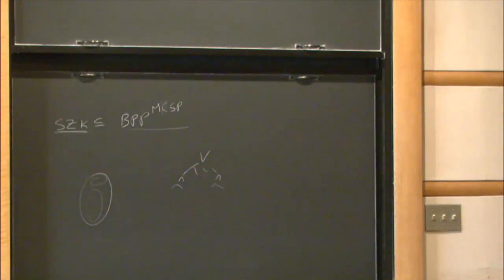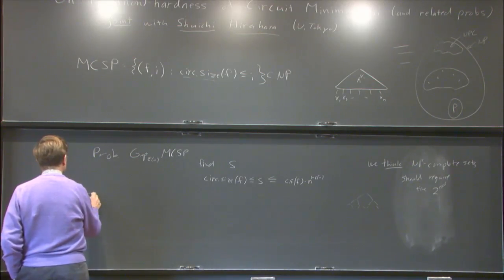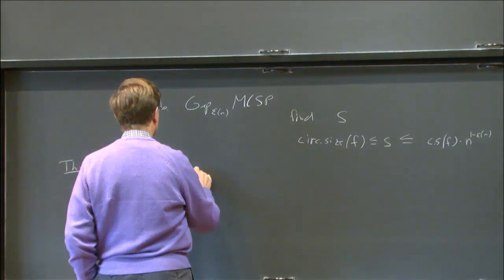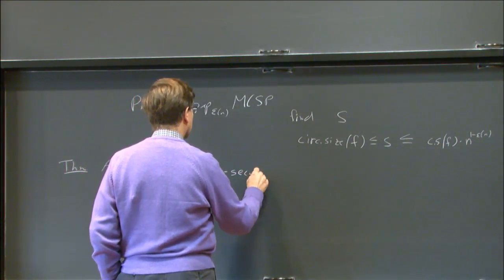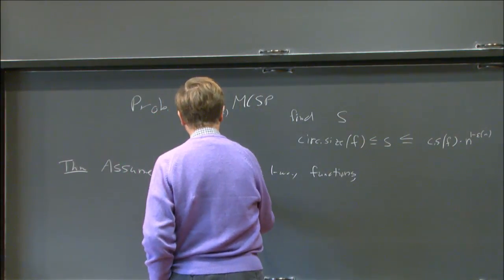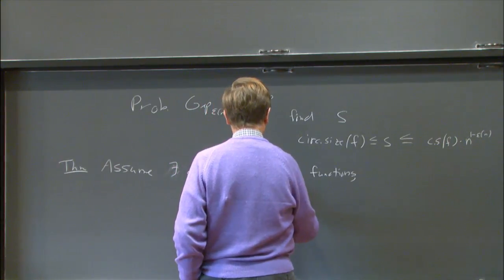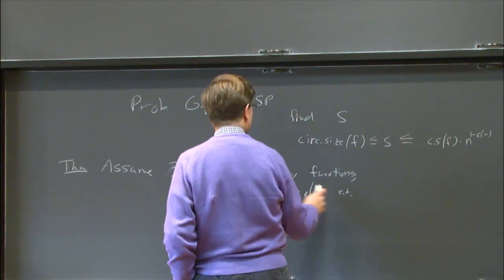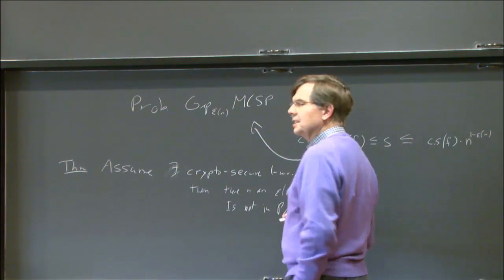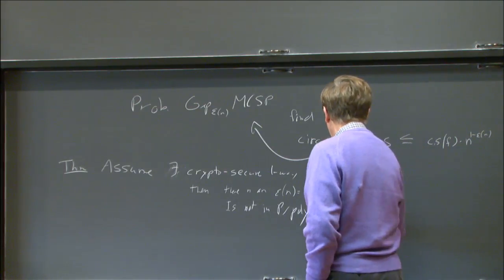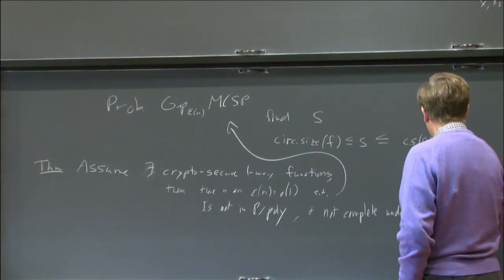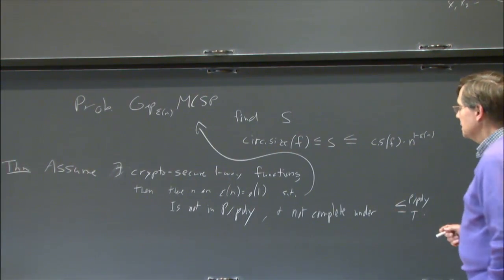So the theorem we're going to present is: assume there exist cryptographically secure one-way functions, then there is an epsilon of N that's little-o of 1 such that this problem is not in P-poly and is not complete under P-poly Turing reductions.